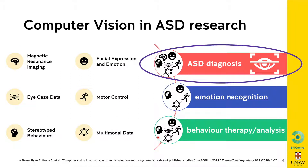In our current review of related literature, we found that different biological and behavioral markers can be quantified using computer vision. These markers include magnetic resonance imaging, facial expression and motion, eye gaze data, motor control movement, stereotype behaviors, and finally a combination of any of these.